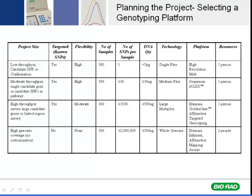And finally, if you're going for full genomic coverage — just covering the genome to find what SNPs are there and using powerful database software to determine differences between populations — you're definitely going to want to use something like Illumina Infinium or equivalent. Again, there are service facilities that will provide whole genome SNP analysis.